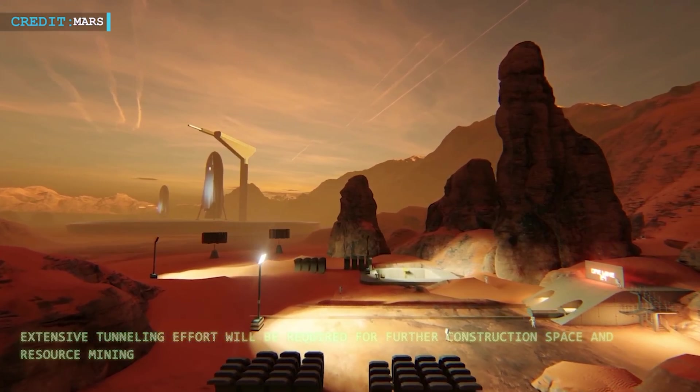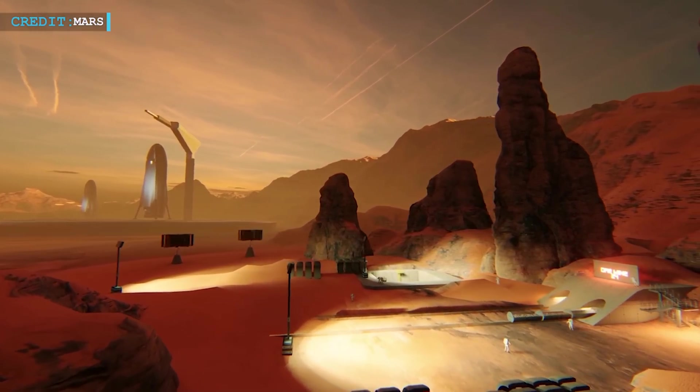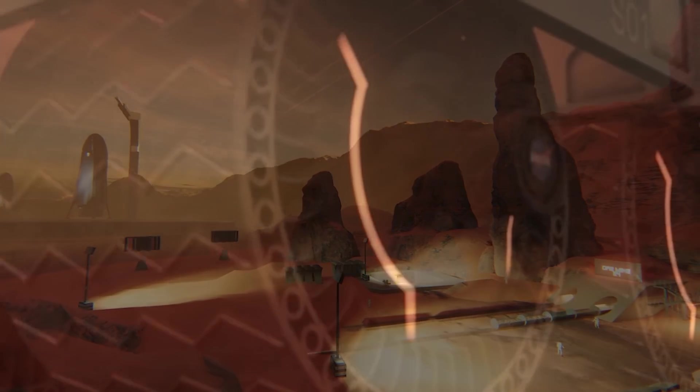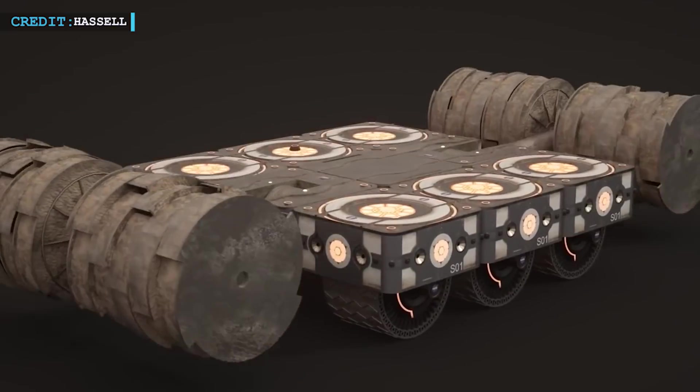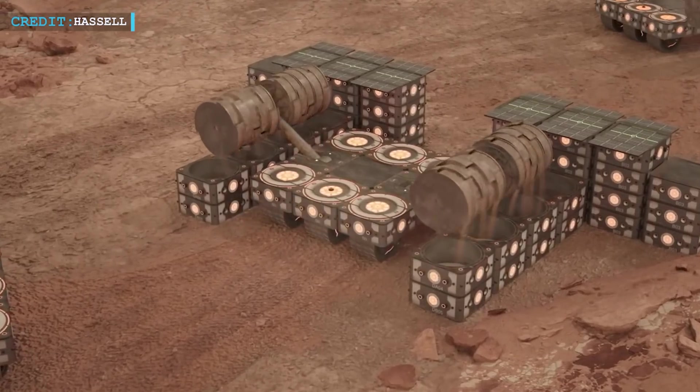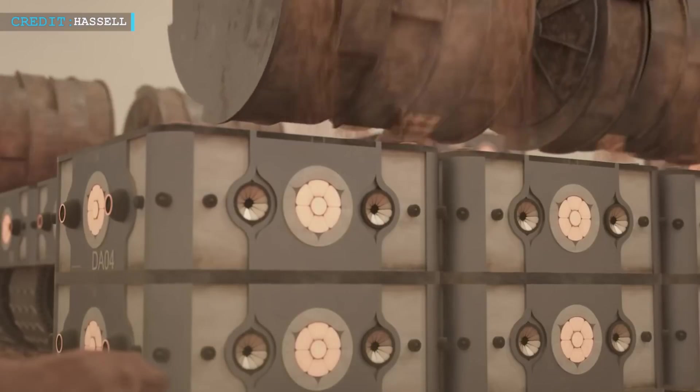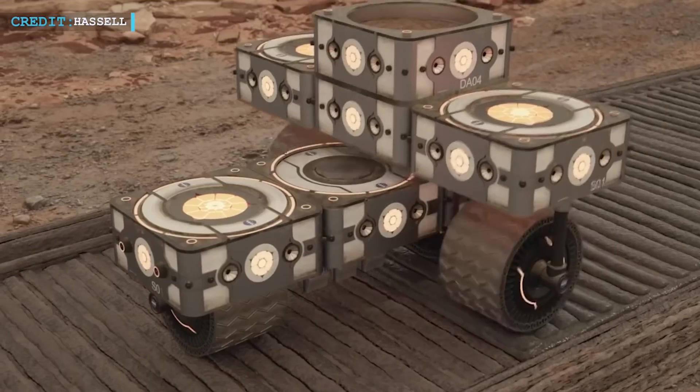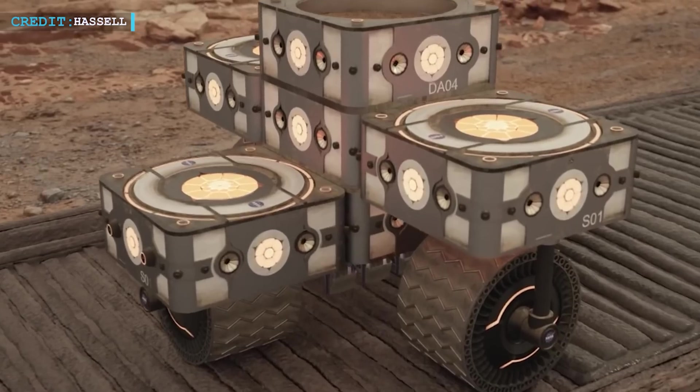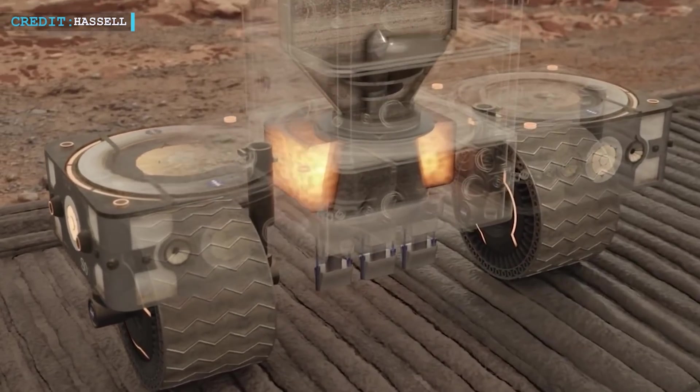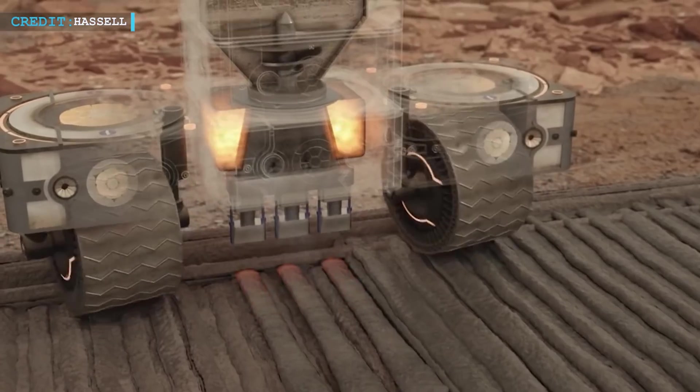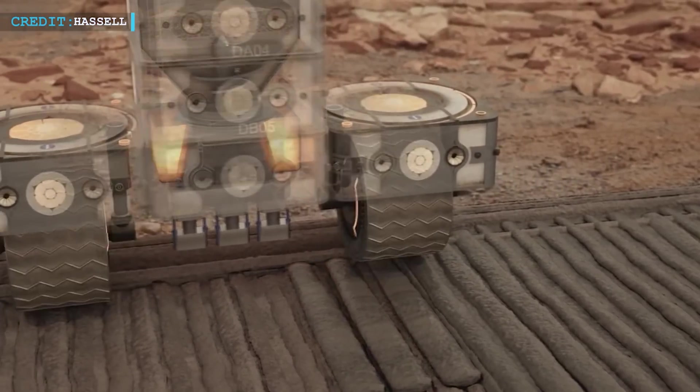But how does one build a protective exterior shell for these habitats? Here come the small robots, tirelessly working to fuse regolith, the loose rocks and soil found on Mars, into concrete. This innovative use of materials acts as the building material for the habitat's shell. It is a testament to human resourcefulness, harnessing the resources available on Mars to create a safe haven for colonizers.